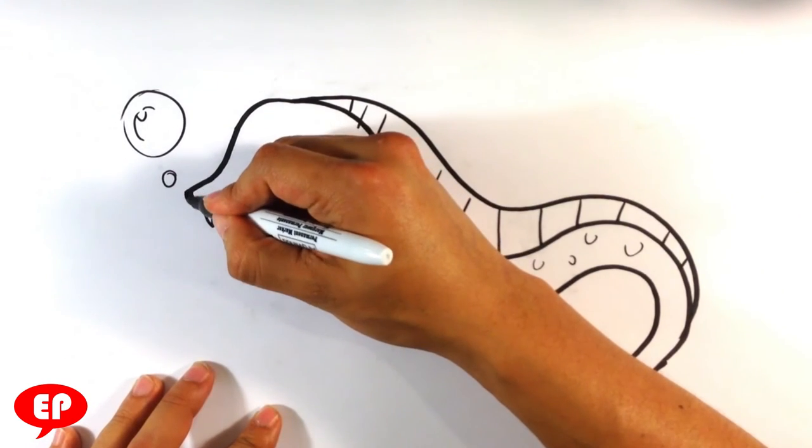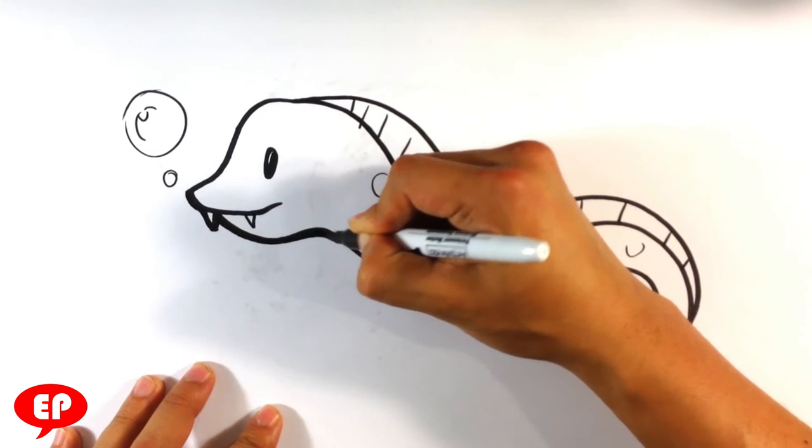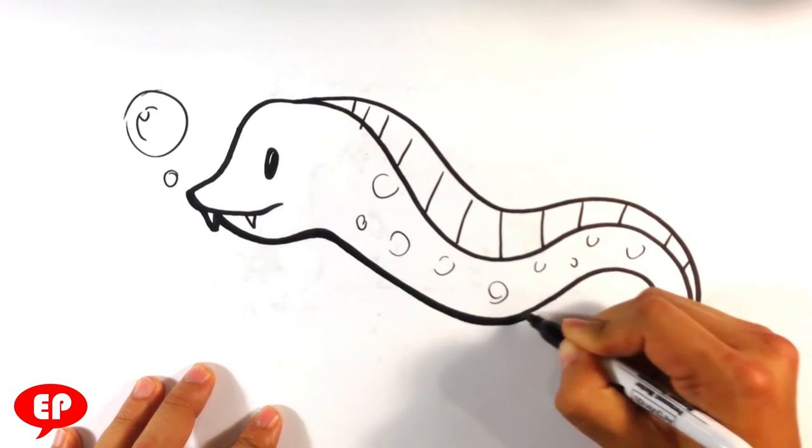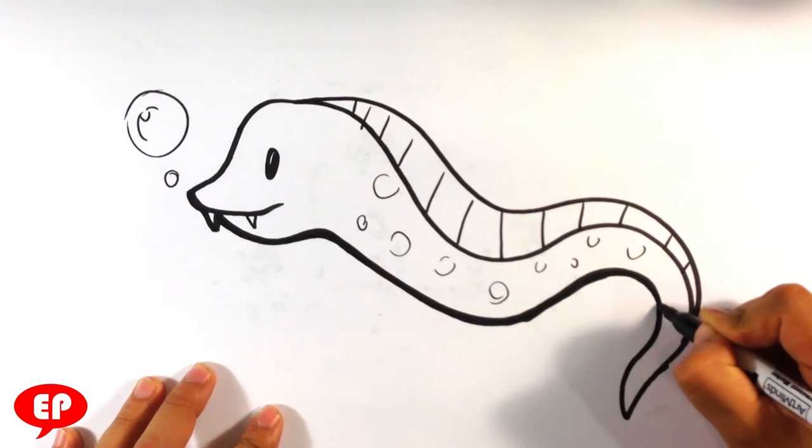But yeah, I'm going to thicken that outer line like I normally do. I just like it. Looks like it's from a coloring book when you do that.